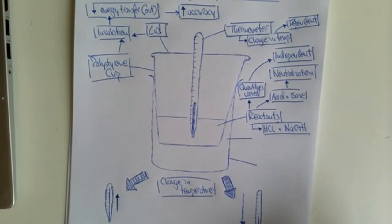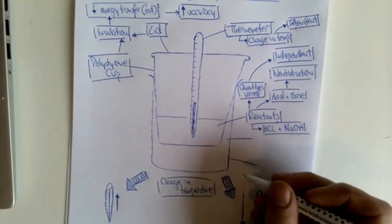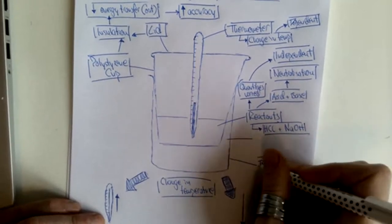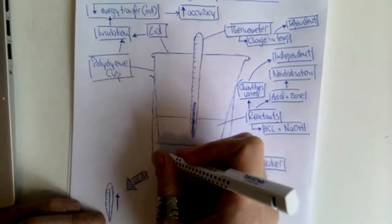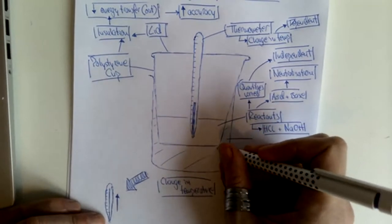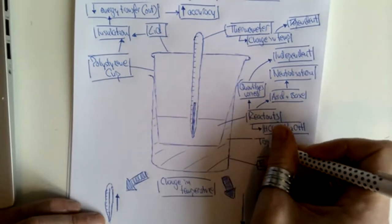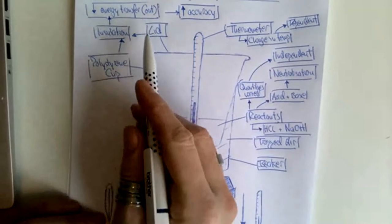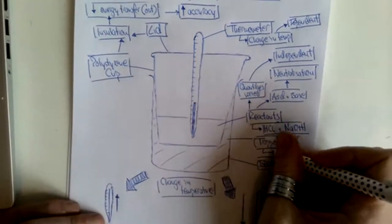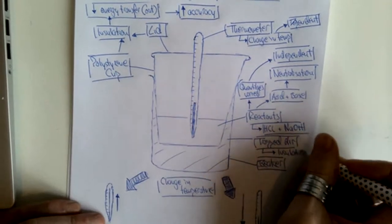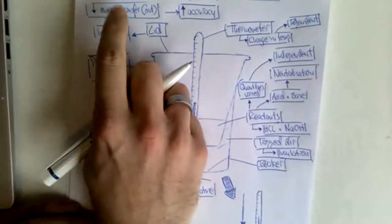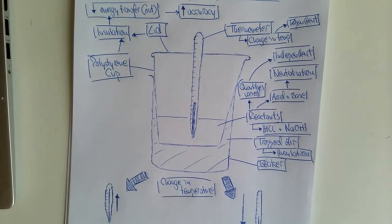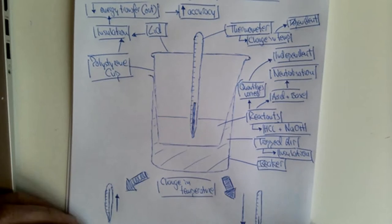As well as that, the polystyrene cup is also placed into a beaker, because this gives an area of trapped air. In the same manner as the lid and the polystyrene cup, the trapped air also acts as insulation and decreases the rate of energy transfer out of the cup, meaning your results in terms of measuring the temperature change are more accurate.